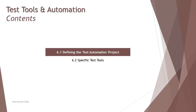We have two topics to cover as a part of this chapter: 6.1, defining the test automation project — how do you define an automation project and the criterias — and 6.2, specific test tools which can be helpful at any point of time to assist your testing. In this tutorial we're getting started with 6.1.1, defining the test automation project.